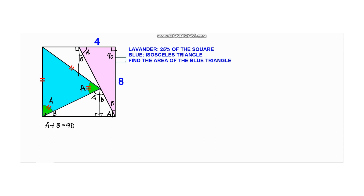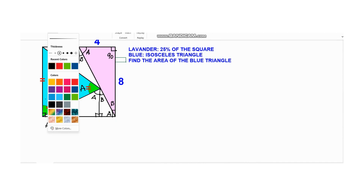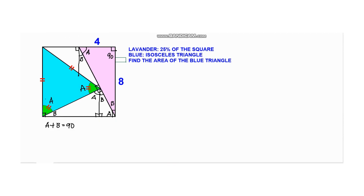Since A plus B equals 90, this angle should be 90 and this should also be 90. So if that is angle 2B, then this angle should be 90 minus 2B, and if that is 90 minus 2B then this should be 2B. And if we draw a line from this point to the triangle, since this is an isosceles triangle, we can divide this 2B into two equal parts: B and B.